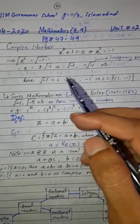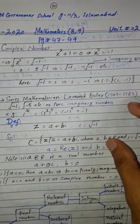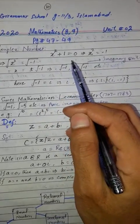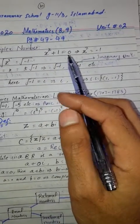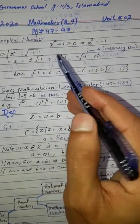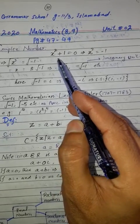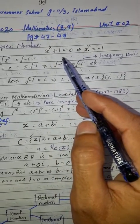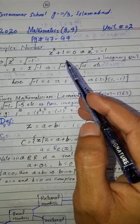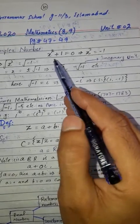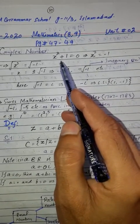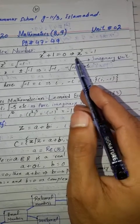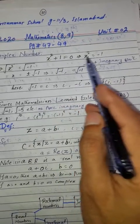Now there is a problem we need to look at first, and then we will decide why complex numbers are needed. Consider the equation x squared plus 1 equals 0. I want to solve it. Simply rearrange: bring the 1 to the right side, giving x squared equals minus 1.